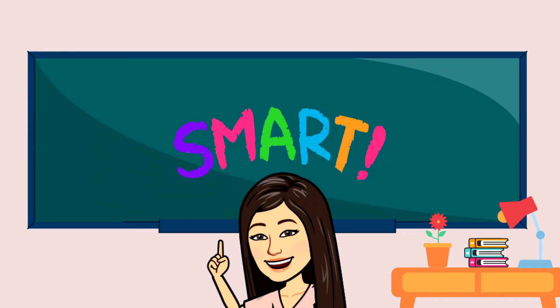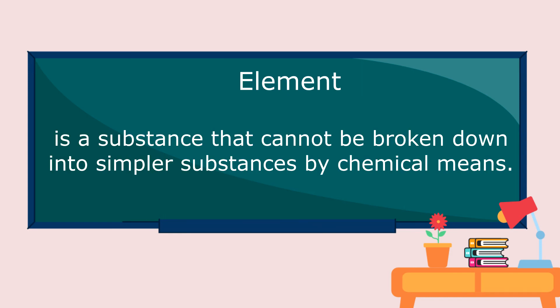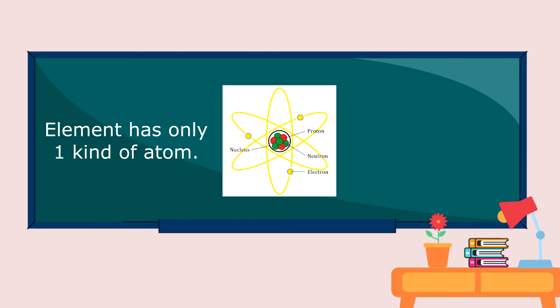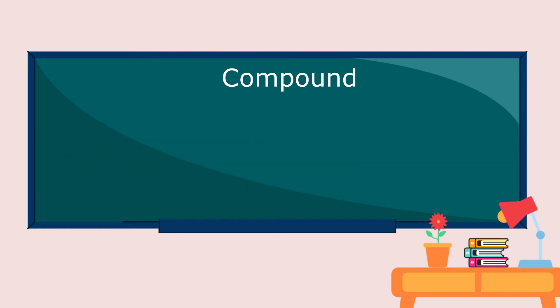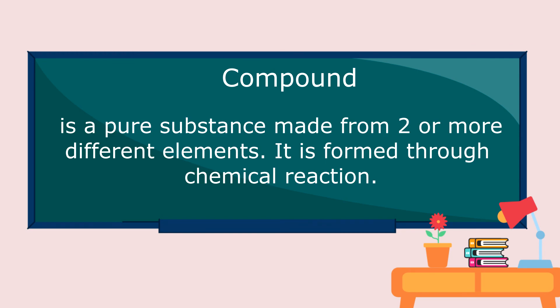Let us now summarize our lesson for today. Element is a substance that cannot be broken down into simple substances by chemical means. Element has only one kind of atom. A compound is a pure substance made from two or more different elements and it is formed through chemical reaction.